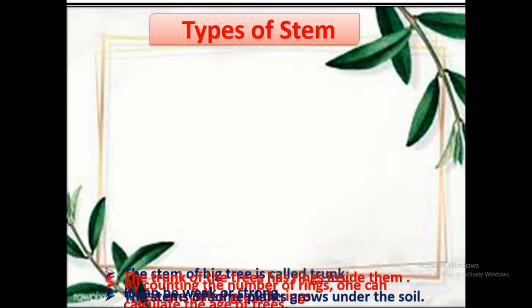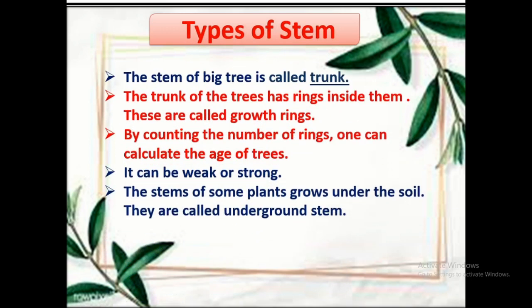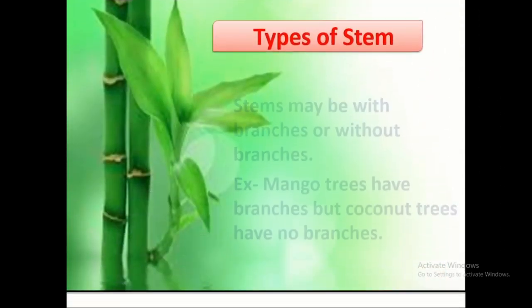Did you know the stem of a big tree is called a trunk? The trunk of trees has many rings inside it, called growth rings. By counting the number of rings we can calculate the age of the tree. The trunk can be very strong. The stem of some plants also grows under the soil, and those stems are called underground stems.